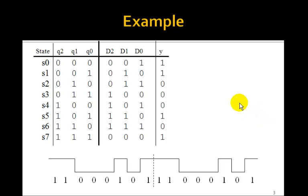Here's an example. Suppose we make the output Y: 1, 1, 0, 0, 0, 1, 0, 1 as Q2, Q1, Q0 count from 0 to 7.